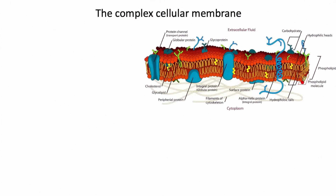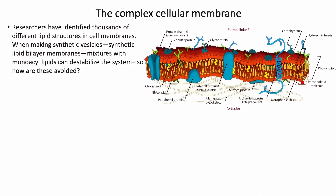The complex cellular membrane — this is what the membrane of a cell looks like when made really simple in cartoon form. Researchers have identified thousands — actually 40,000 different lipids have now been identified in cell membranes. Not just one. Every protocell experiment uses one type of lipid, but a cell is actually made up of thousands of different types.